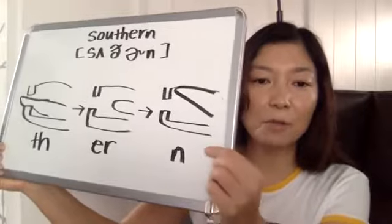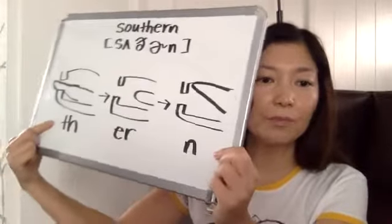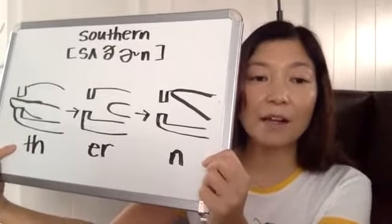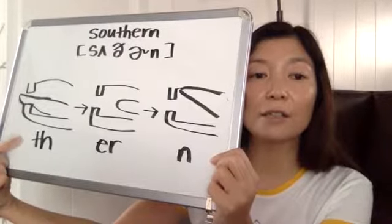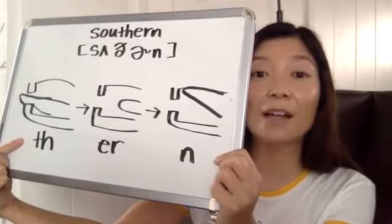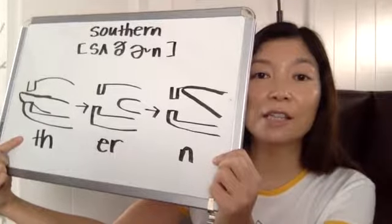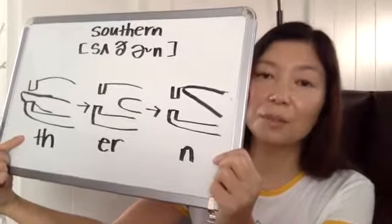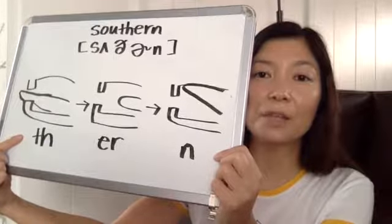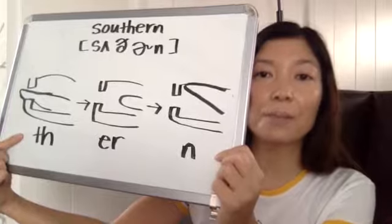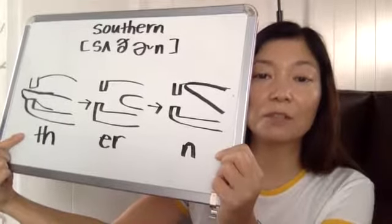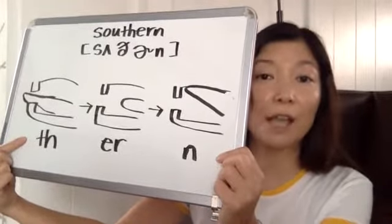And make sure for TH, the air comes out continuously. So you don't want to block the air. So the tongue is actually like some people say bite your tongue when you pronounce TH. But actually you're not biting your tongue because if you bite your tongue, that means you're blocking the air.